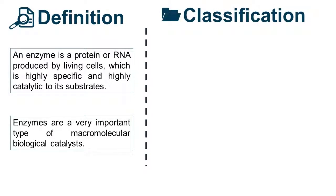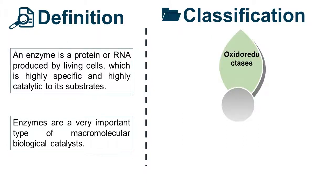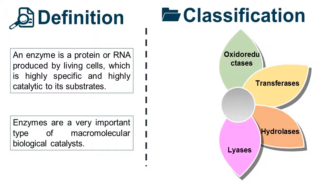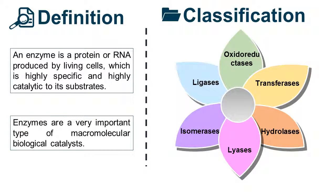Enzymes are classified into six categories, including oxidoreductases, transferases, hydrolases, lyases, isomerases, and ligases.